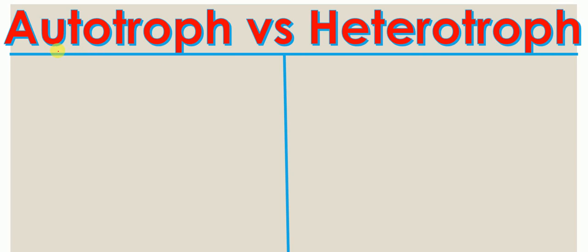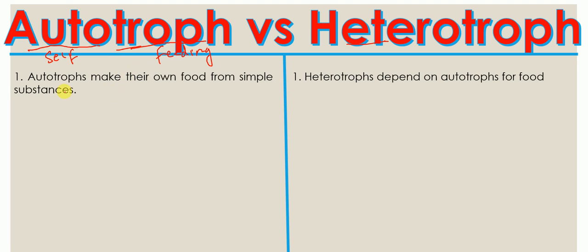Hello everyone. In this lecture today I'm going to talk about the difference between autotrophs and heterotrophs. If you look at the word autotroph, it is derived from two Greek words: auto, meaning self, and troph, meaning feeding or nourishment. That means autotrophs make their own food from simple substances.